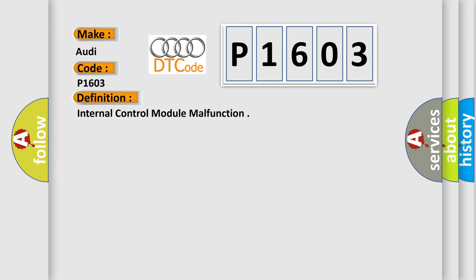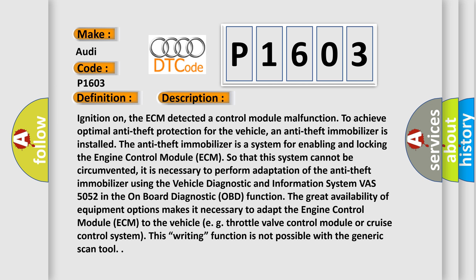The basic definition is Internal Control Module Malfunction. With ignition on, the ECM detected a control module malfunction. To achieve optimal anti-theft protection for the vehicle, an anti-theft immobilizer is installed. The anti-theft immobilizer is a system for enabling and locking the engine control module ECM so that this system cannot be circumvented. It is necessary to perform adaptation of the anti-theft immobilizer using the vehicle diagnostic and information system BAS 5052 in the onboard diagnostic OBD function.